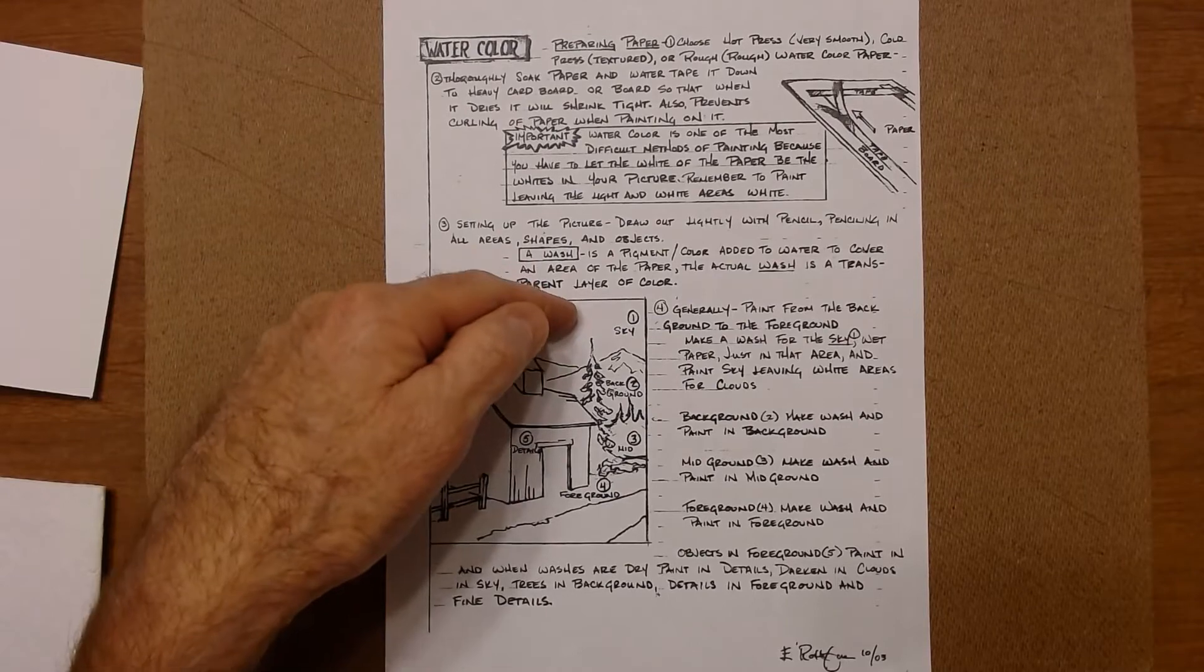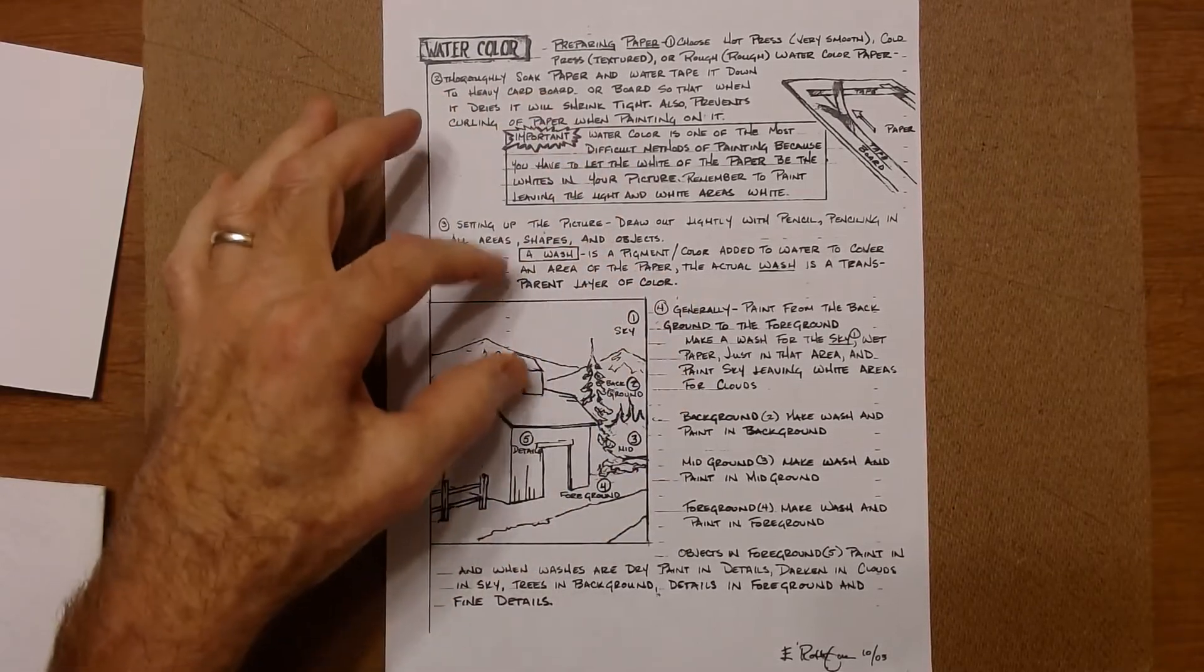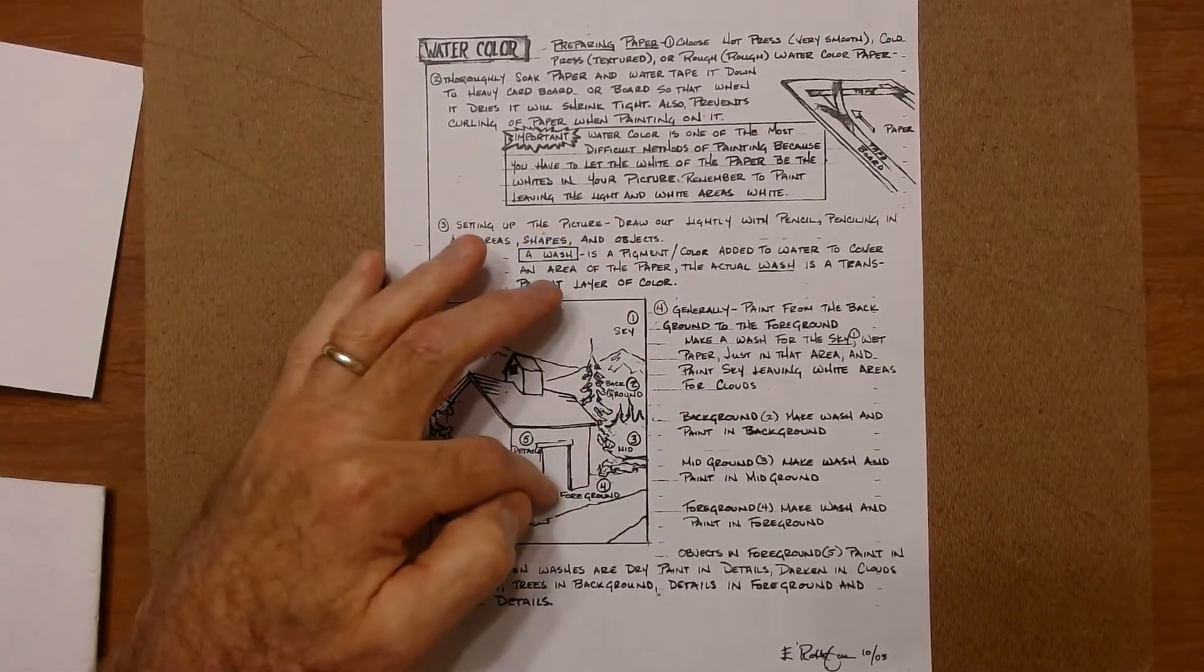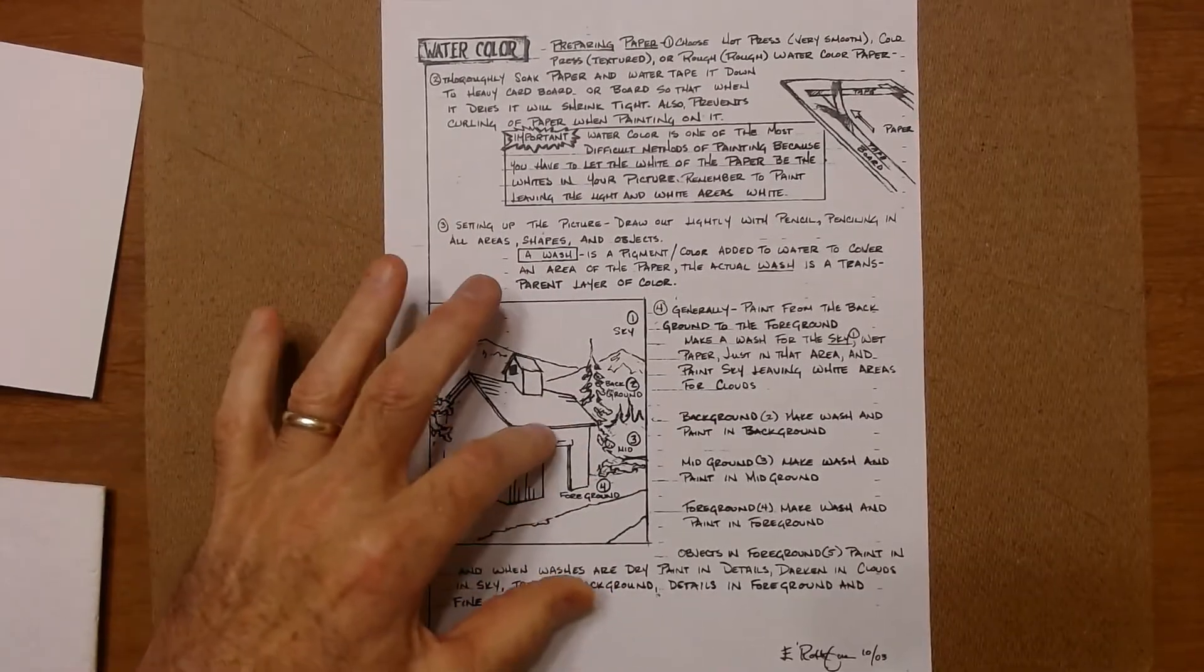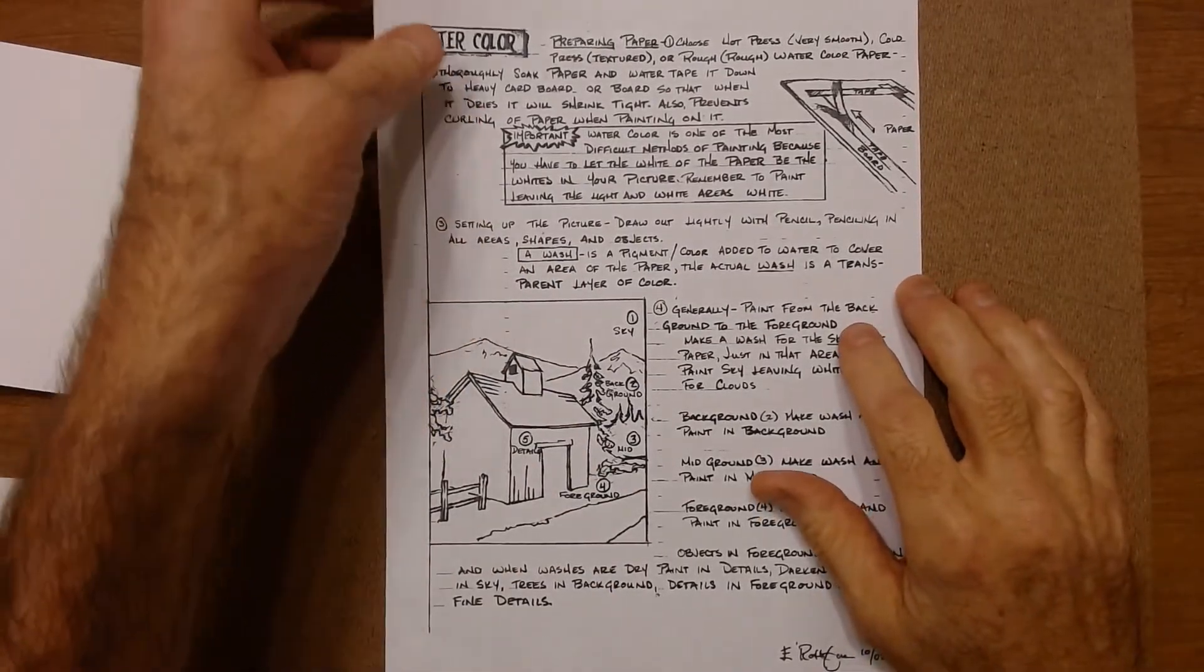So it goes background, which might end up being your sky, mid-ground, foreground, and the details at the end. And you're going to hear me talk about that over and over again.